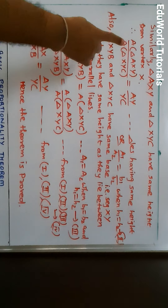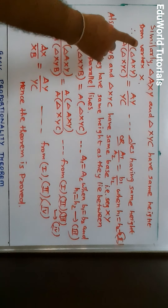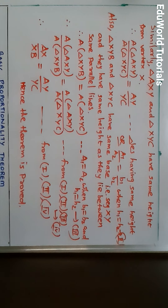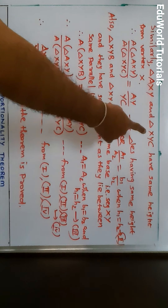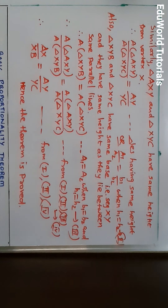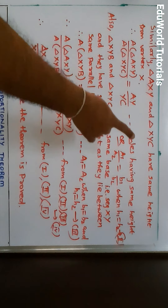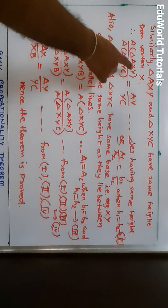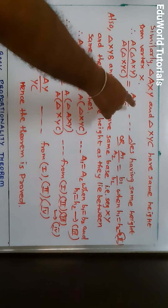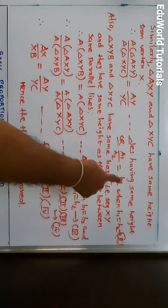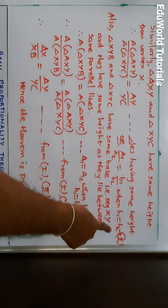Similarly, triangle AXY and triangle XYC have the same height from vertex X. When two triangles have the same height, their areas are proportional to corresponding bases. So, area of triangle AXY upon area of triangle XYC is equal to AY upon YC. Reason: triangles having same height, or A1/A2 = B1/B2 when H1 = H2. This is Result 2.